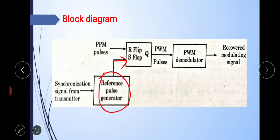The PWM pulses are then demodulated using the PWM demodulator. At the leading edge of the PWM pulses, the flip-flop is reset, meaning turned off. When input is given to the S point, it turns on. This turning on and turning off process produces the PWM signal at the output of the flip-flop, which is demodulated using the PWM demodulator to recover the required modulating signal.